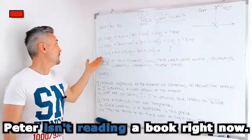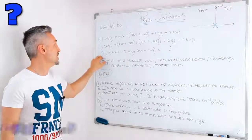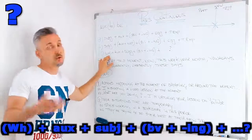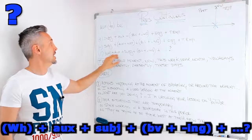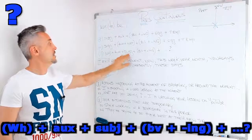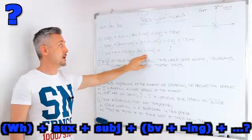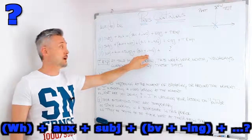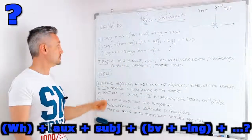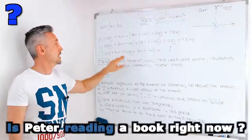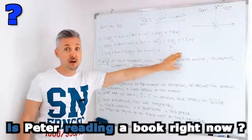Then, for the same type of sentence but in a question, we need the wh- question word if there is one, then the auxiliary 'to be', then the subject, then the base of the verb plus the -ing form, and then the time expression or the object. For example: Is Peter reading a book right now?